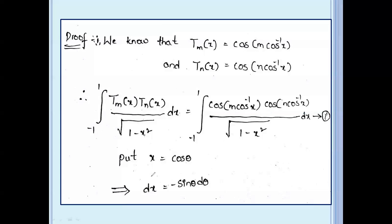Now, put x equal to cos θ. Then the derivative is: dx equal to minus sin θ dθ.